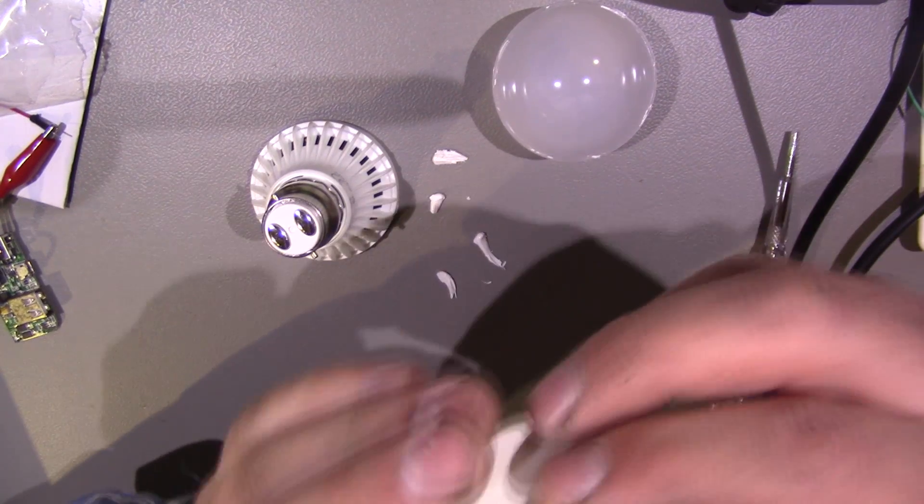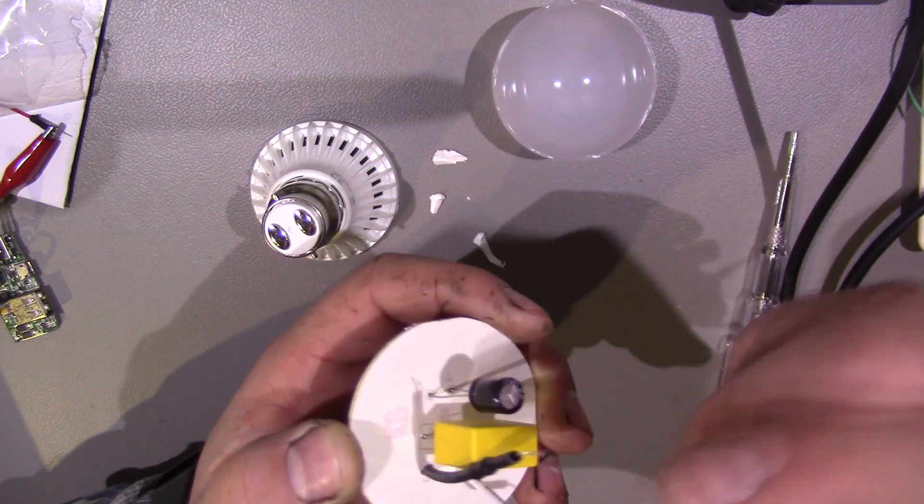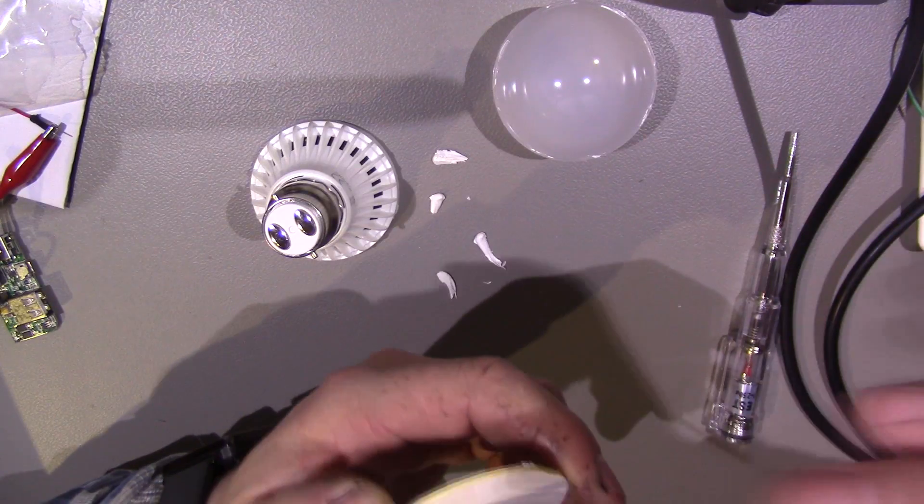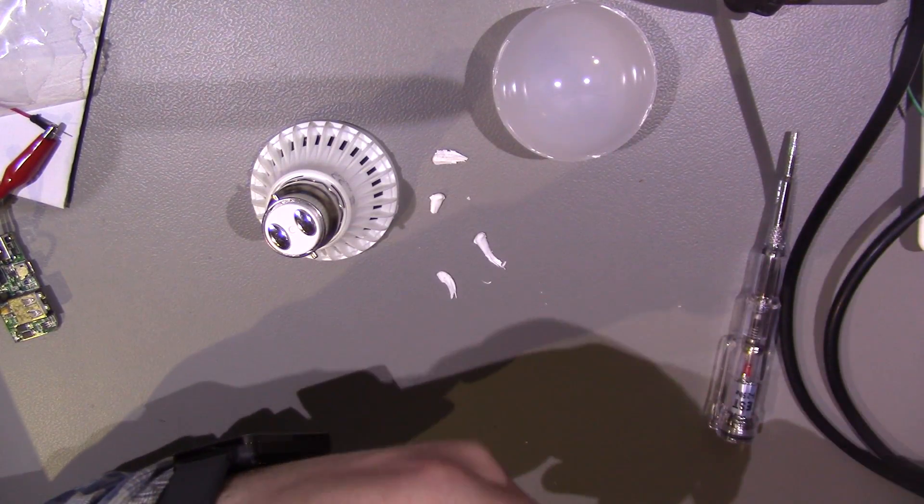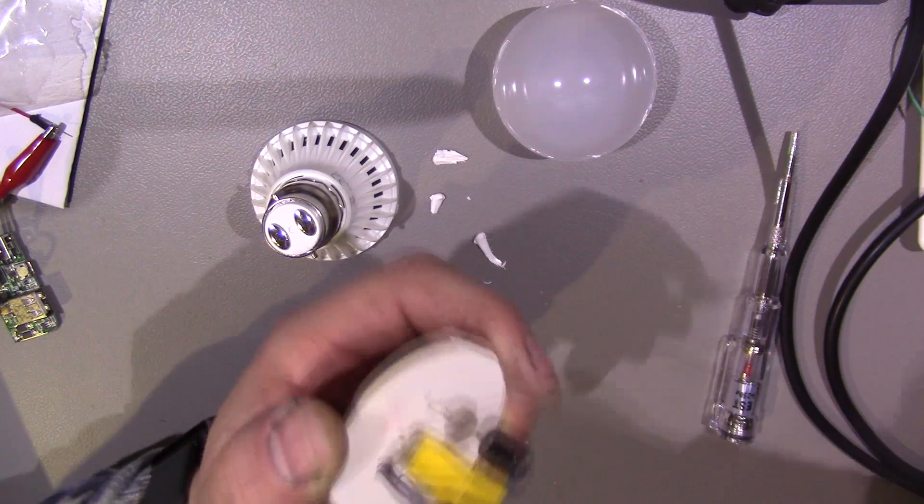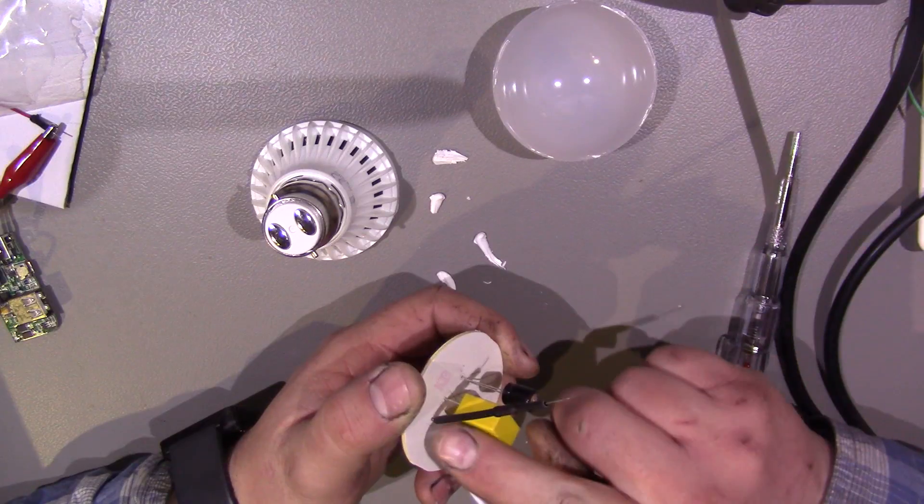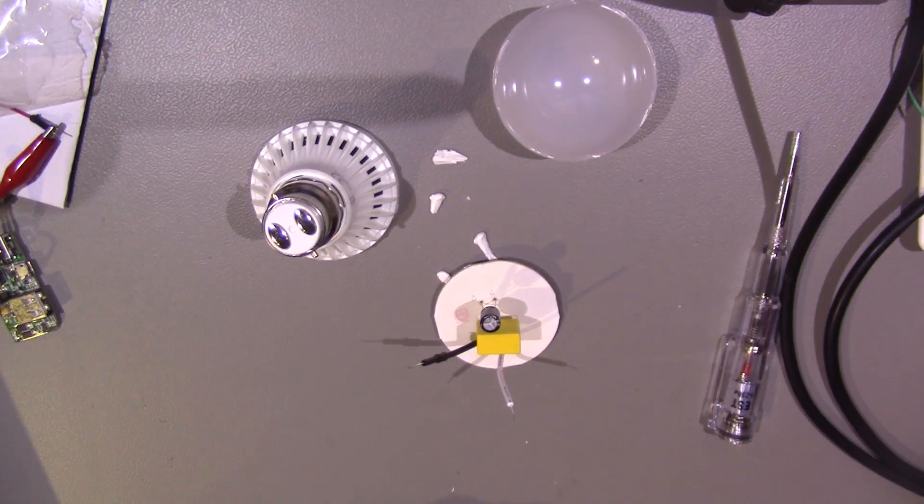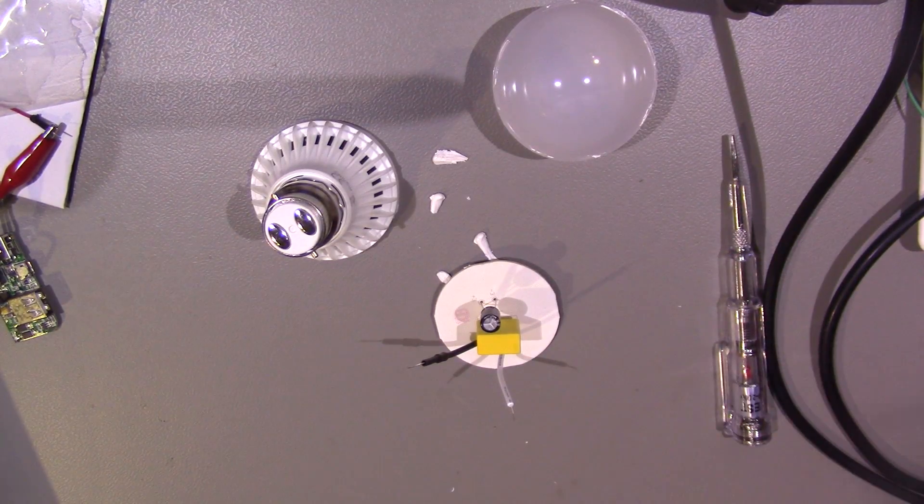So inside, well not much at all is there actually. A lot less than I thought there would be. So we've got our live coming in here on the black wire and neutral on the white. Slightly odd colour scheme. That's an American colour scheme I think. Looks like we've got a resistor in line with the live wire. We will get the meter out and measure that.